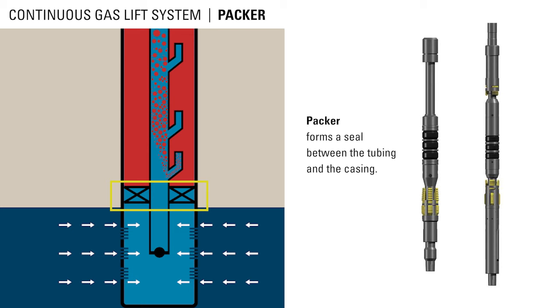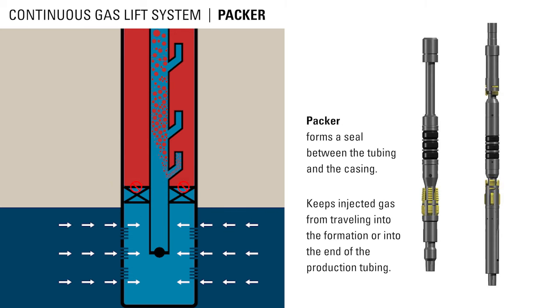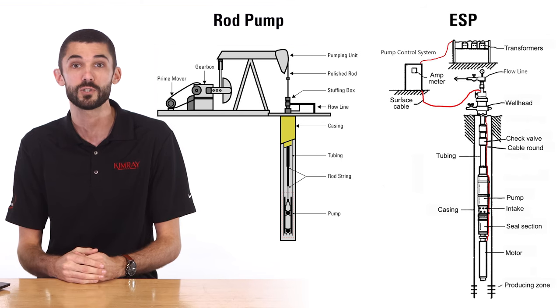A packer is a device that forms a seal between the two chambers of the well — the tubing and the casing. This seal keeps injected gas from traveling into the formation or into the end of the production tubing. For the final stages of production at the end of a well's life, operators replace other artificial lift systems with intermittent gas lift until reservoir pressures become too low to lift the target fluid volumes. When it's not economical to operate gas lift or bottom hole pressure is too low, operators typically switch to rod pump or electric submersible pump systems.